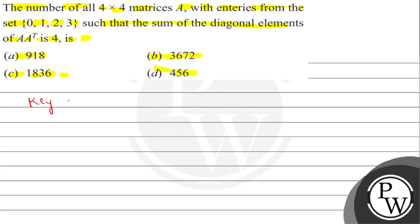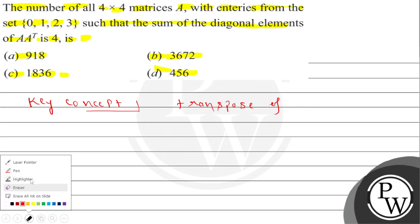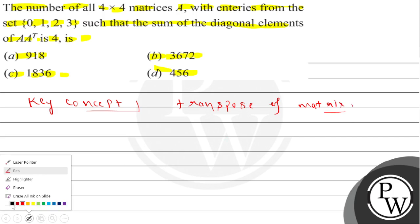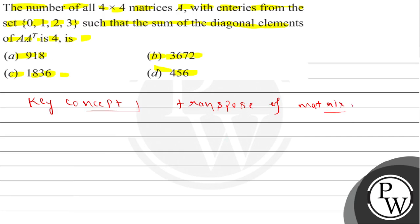Here we need to find the number of possible matrices. We have A transpose, and A times A^T is a 4×4 matrix. We will solve the case using the transpose of the matrix. In the problem, we have a 4×4 matrix, so we consider A^T and its diagonal entries.